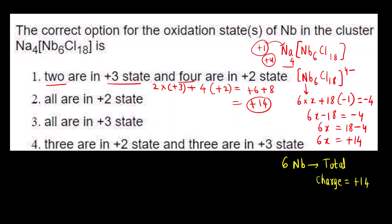Let us see second and third option. All are in plus 2. How many niobium are present? Six. 6 into plus 2 will be plus 12. Is the overall charge plus 12? No, it is plus 14. Option 2 is incorrect.